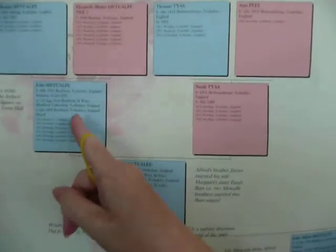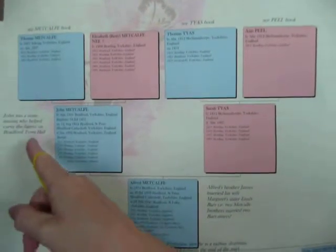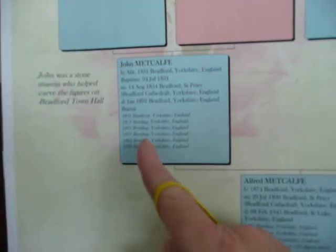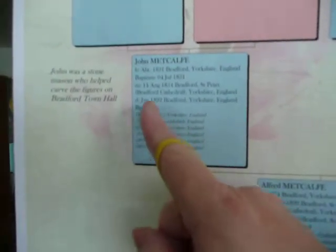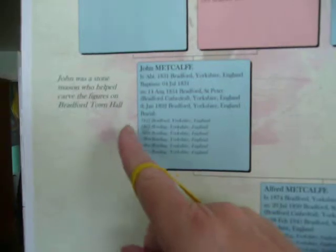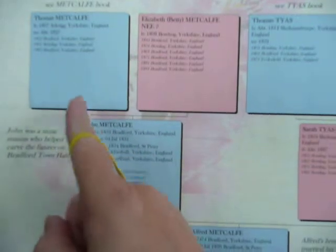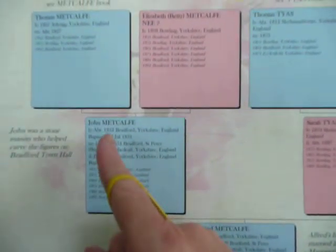We'll go up a branch now to John Metcalfe. Ivy reminisces that John was a stonemason who apparently helped carve the figures on Bradford Town Hall — that must have been a really great job to get, and obviously only the best stonemasons were employed to do that. Then we go up one further branch to Thomas Metcalfe, who was born in Asgrig in Yorkshire. Coming down the tree, it's more or less Yorkshire all the way — we've got Asgrig in Yorkshire and then Bradford right down the tree.